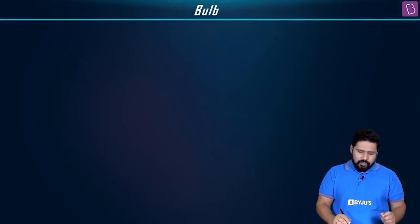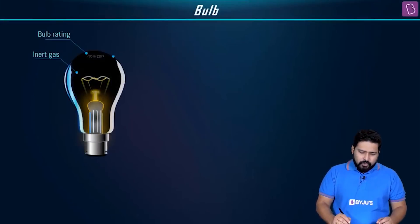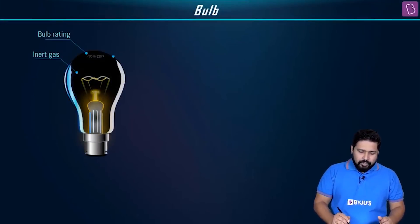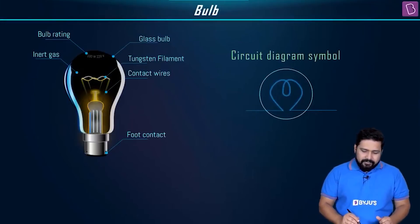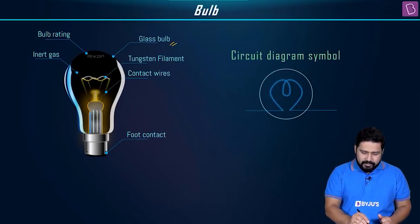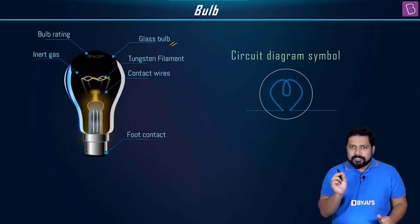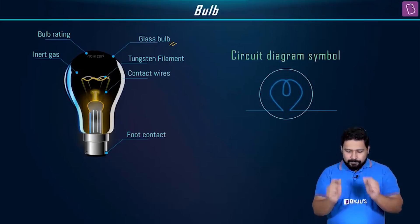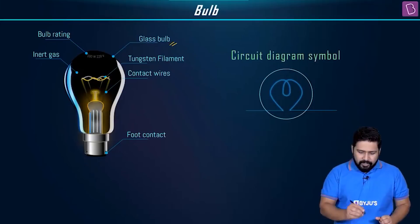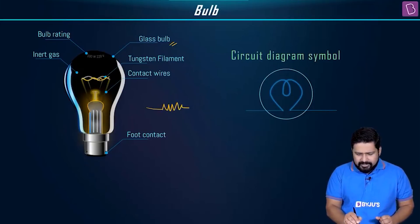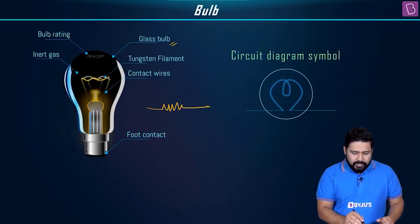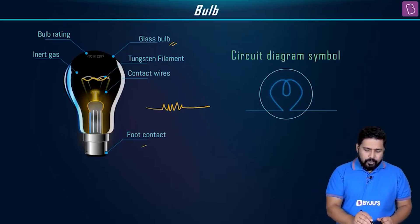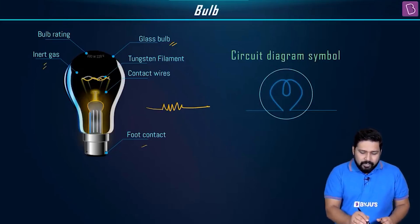Let us understand the parts of the bulb. A glass bulb has different parts: the glass bulb itself, the tungsten filament — which has resistance and is sometimes denoted as a simple resistor — connecting wires, foot contact, and inert gas.